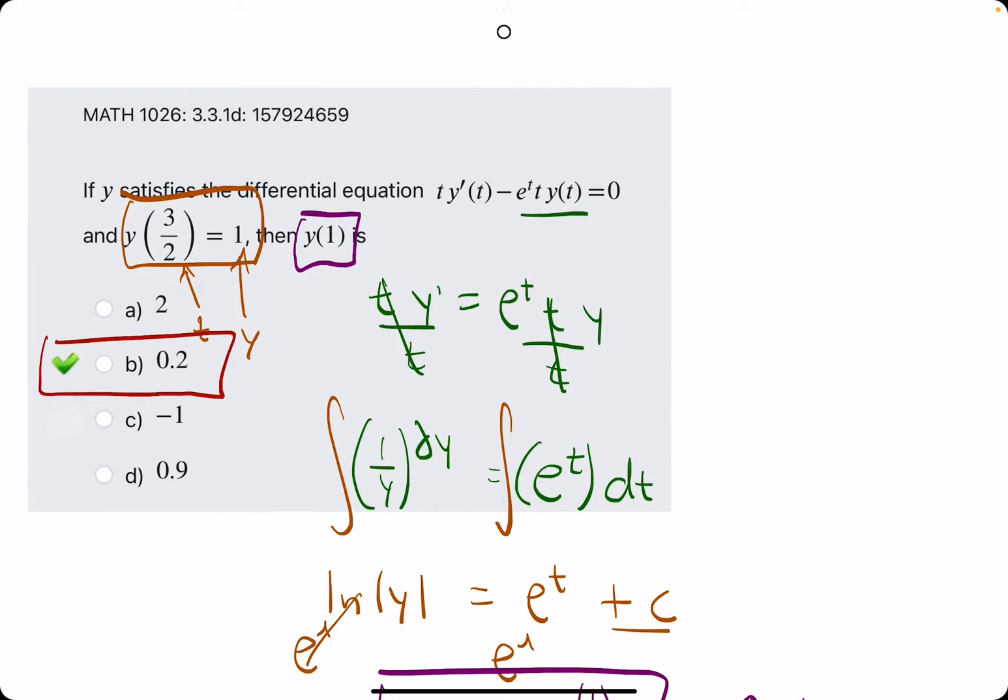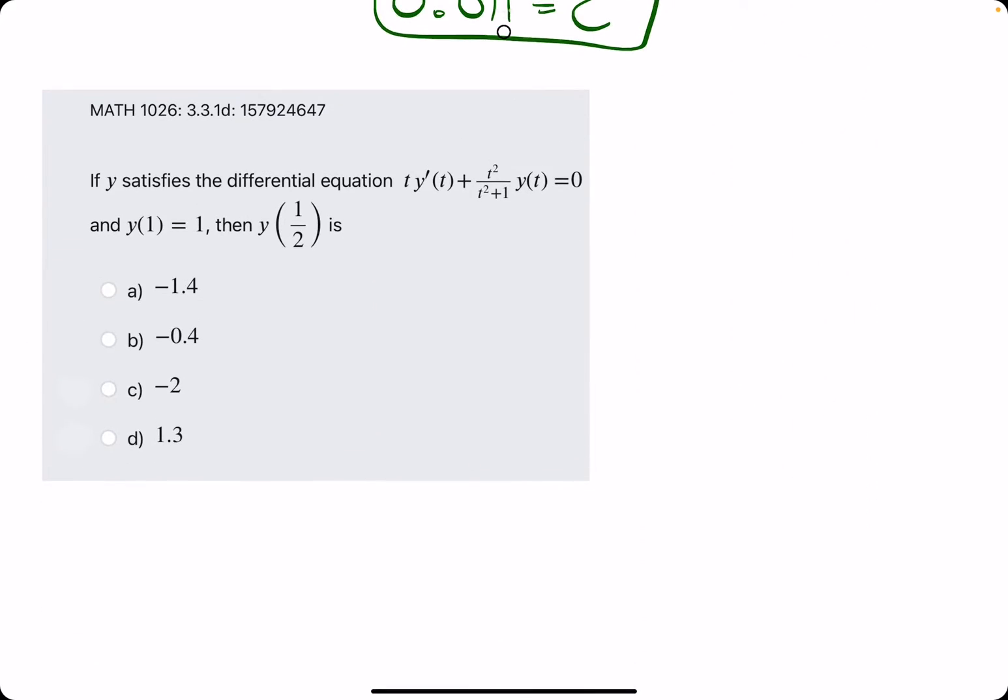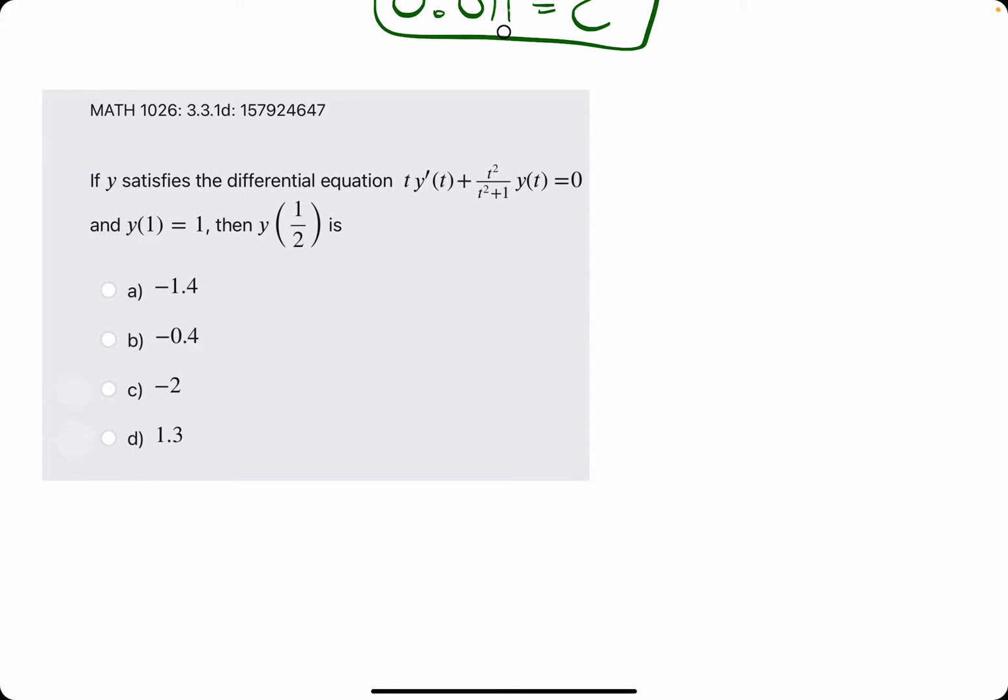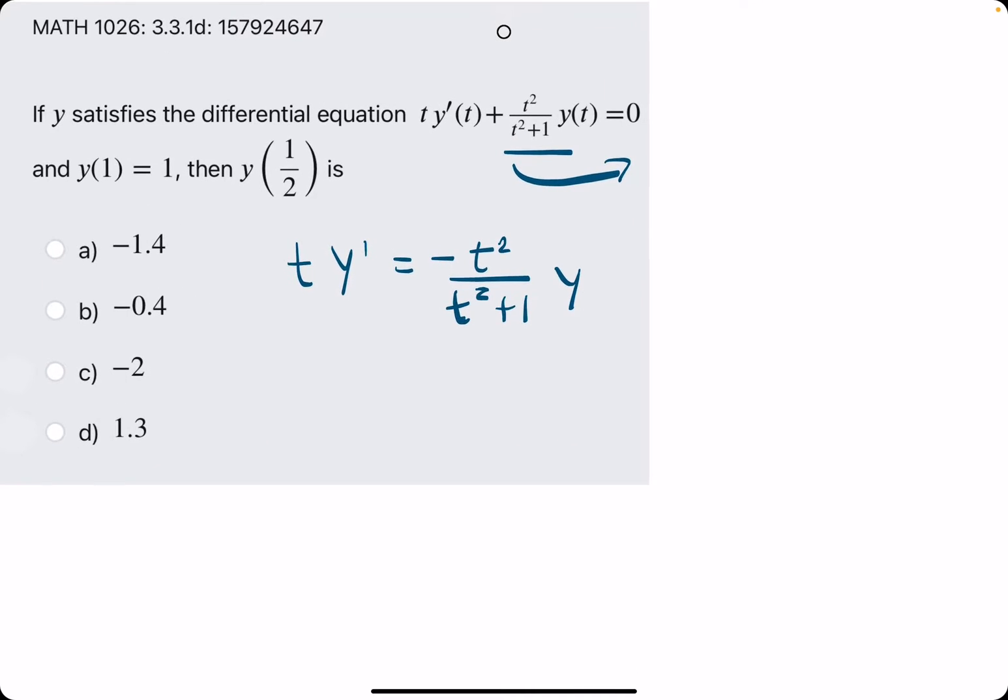Yeah, look at that. Okay. So sort of a weird one, but hopefully the process makes sense. Nothing too different from what we've done already. Let's go ahead and do two more examples if we have time in this video. So solving for y prime, isolating y prime, we will subtract this term. So we'll have t squared over t squared plus 1y, and this should be negative since we subtracted this to the right side.